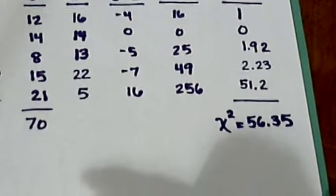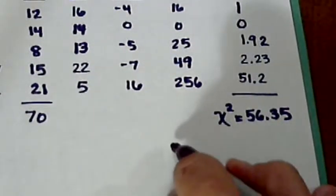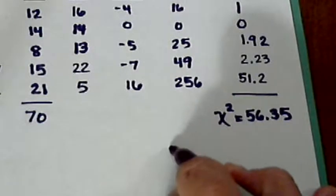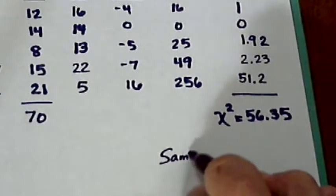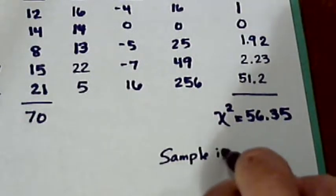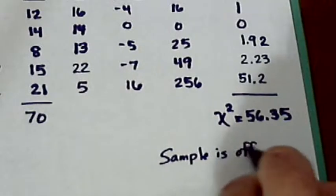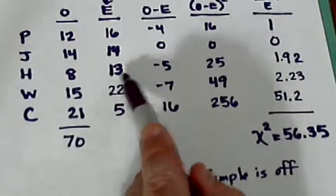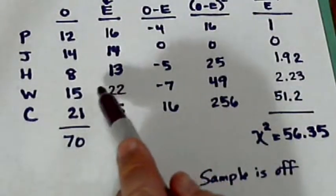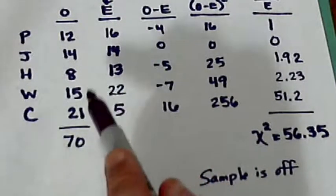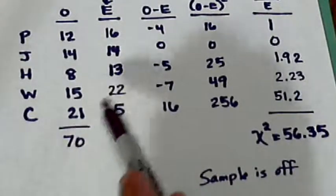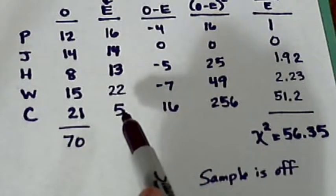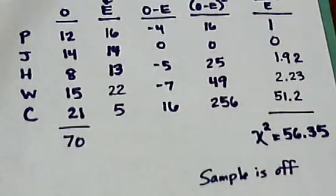Since our chi-square number is well over the number in the table, we say that our sample is off. The expected number of shots taken was not close enough to what the observed was. So that backwards. The observed shots that we saw was not close to what we had expected. So this was not a normal shooting night for this team.